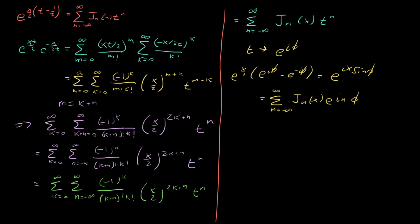The last property: if we take this identity and substitute phi equal to zero, we get e to the zero equals 1 on the left, and on the right the sum from n equals minus infinity to infinity of J sub n of x times 1, which equals 1. So the sum of every integer-valued Bessel function equals 1 — a cool, surprising result made clear by considering the generating function.